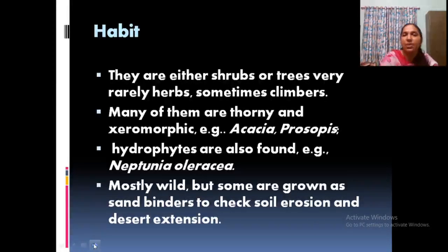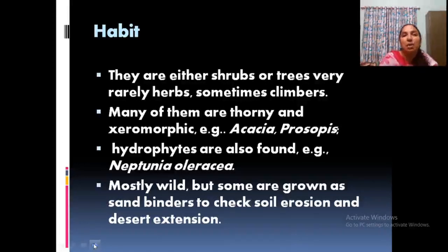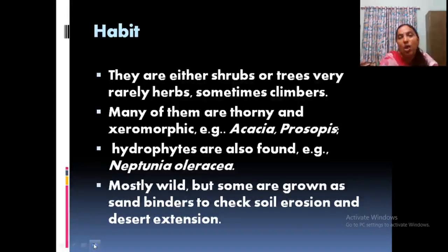Habit is usually shrub, tree, or rarely herb. Mimosa pudica is a herb; some others are trees. Some have thorns on the plant body. Acacia and Prosopis are thorny plants. Xeromorphic and hydrophytic nature are also available — example Neptunia. So xerophytic nature and hydrophytic nature are both available in this group.